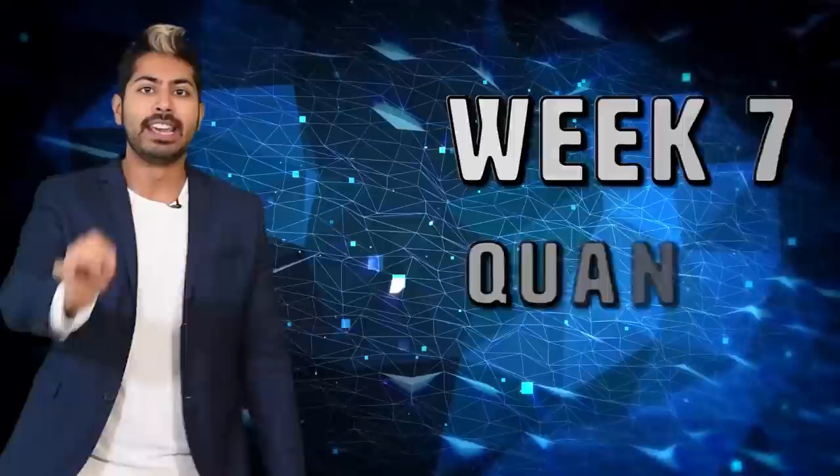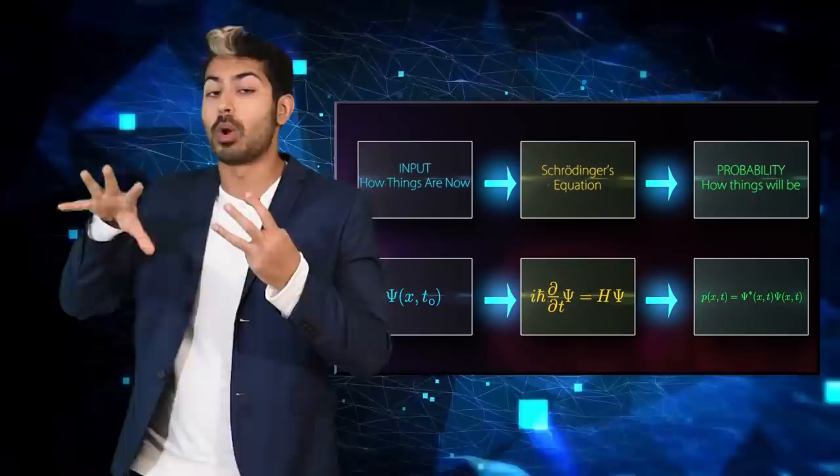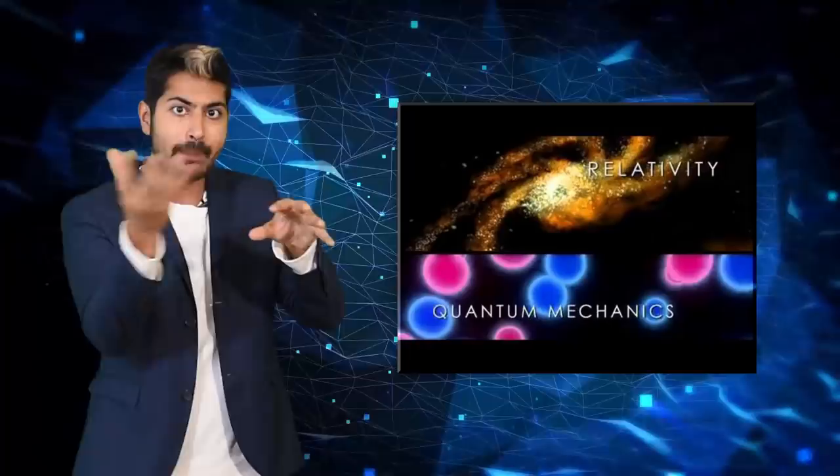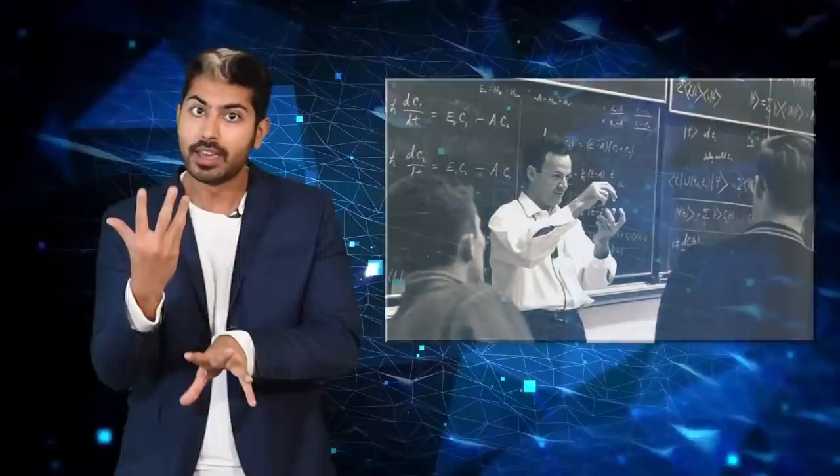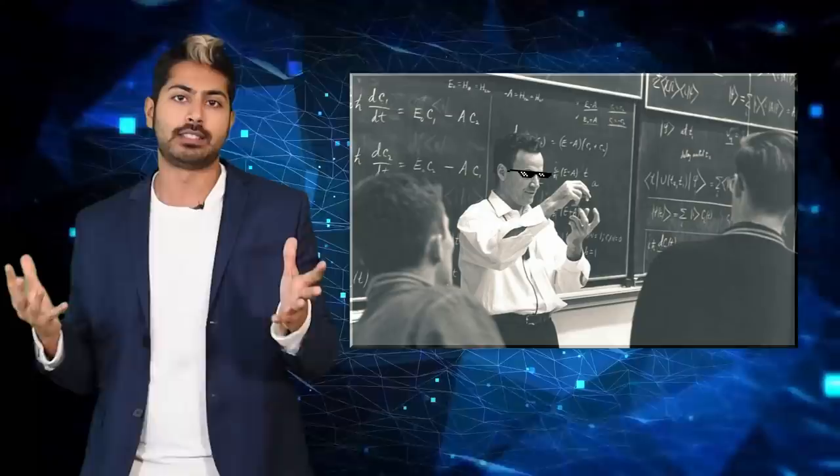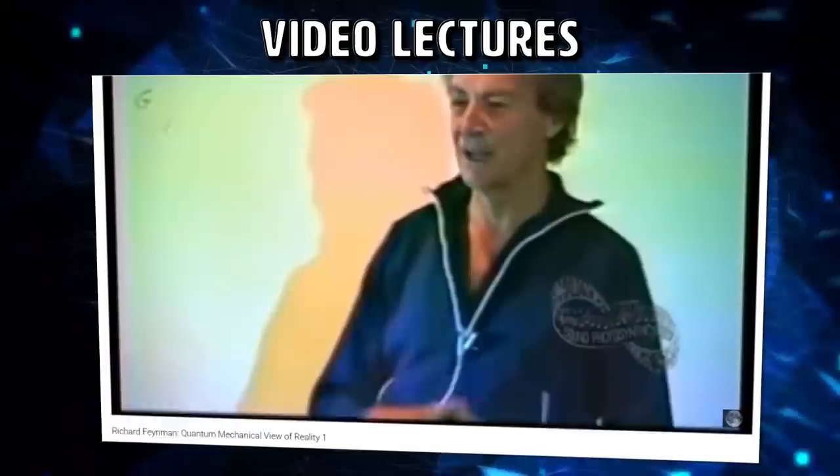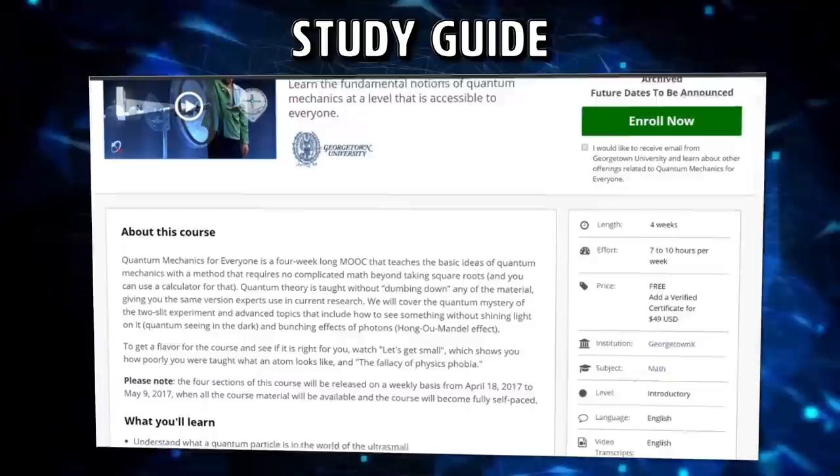Now we get to the fun stuff, quantum mechanics. It's what's helped us define the standard model, which describes the three fundamental forces. And relativity helps describe the fourth, gravity. Basically, general relativity explains macroscopic interactions and quantum mechanics explains microscopic interactions. For this, we're going to go straight to the OG himself, Richard Feynman, who pretty much every physicist looks up to. He's got a series of four free lectures on YouTube called the quantum mechanical view of reality.